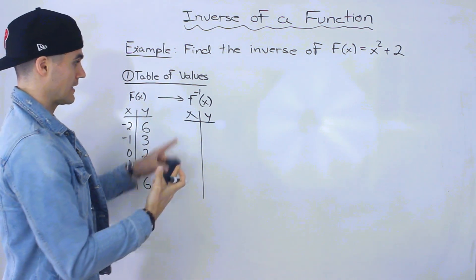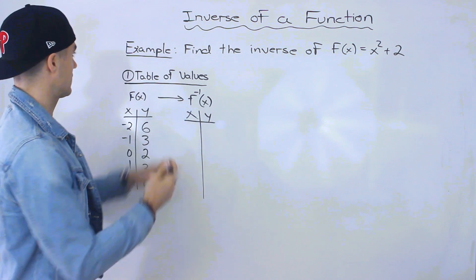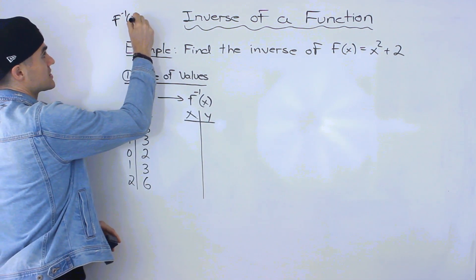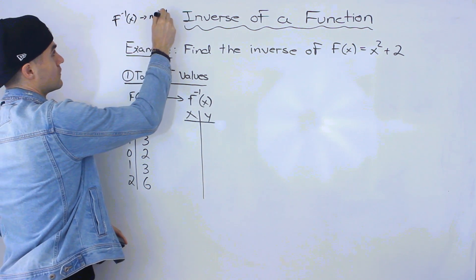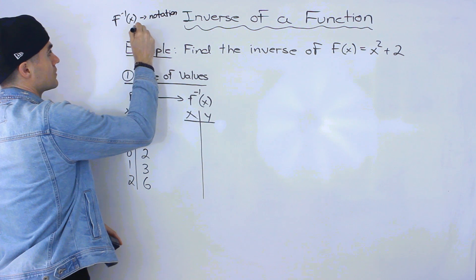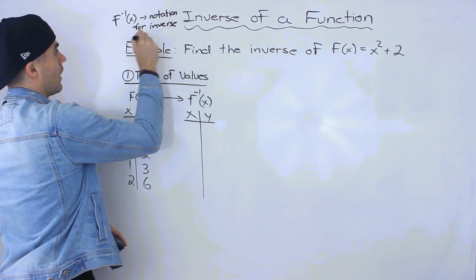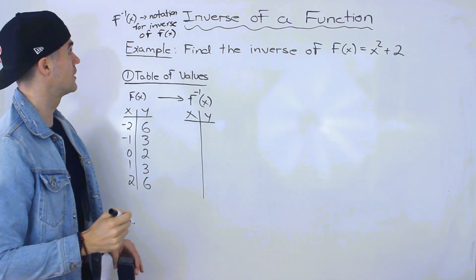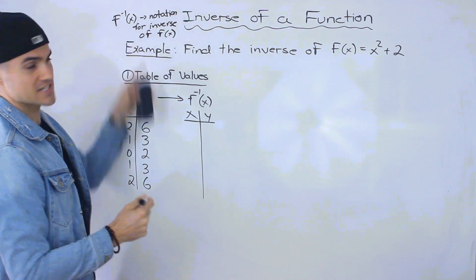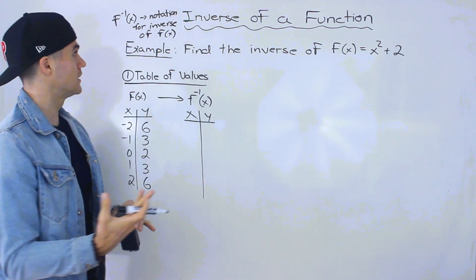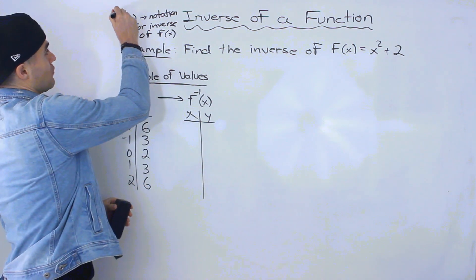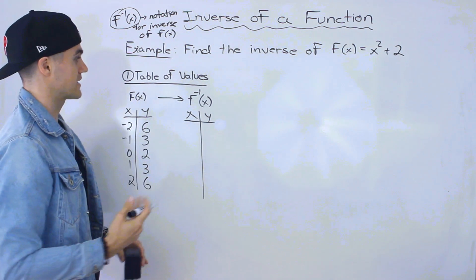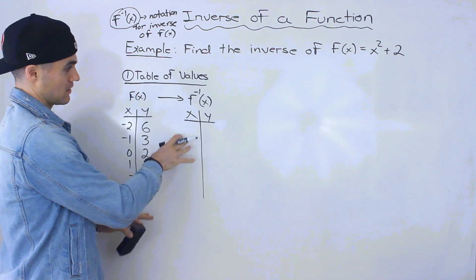All we do for the table of values for the inverse of a function is we just switch the x and y values. One thing I want to note is that f⁻¹(x) is just notation for the inverse of f(x) — whatever function you're working with. This doesn't mean we're taking the function to the power of negative one; the negative one is just notation, so just think of it as a symbol for the inverse of a function.